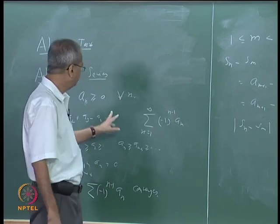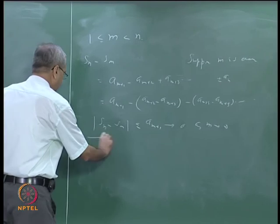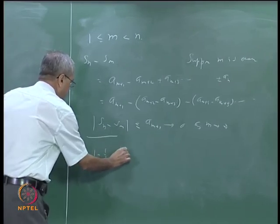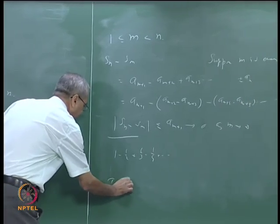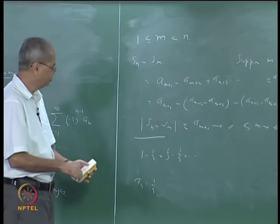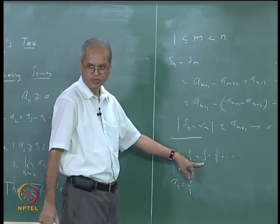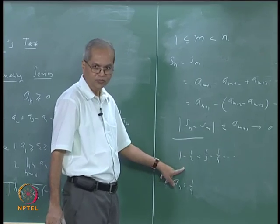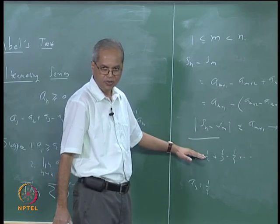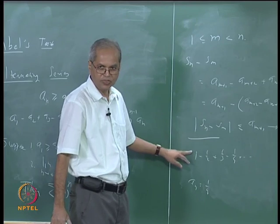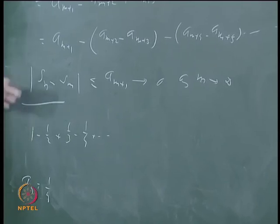One well-known example where this test applies is the alternating harmonic series 1 − 1/2 + 1/3 − 1/4 + ···. Here Aₙ = 1/n, which is monotonically decreasing and converges to 0, so the series converges. At the same time, it does not converge absolutely, because the absolute value series is sigma 1/n, which we have already shown diverges. This is an example of a series that converges but is not absolutely convergent. We shall make a few more observations about this type of series and then proceed to the next topic.